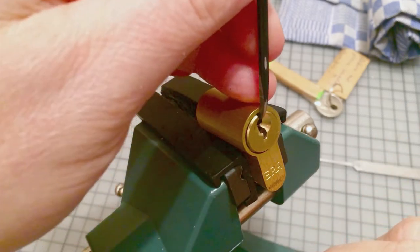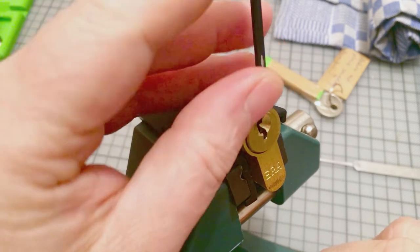I use tension from bottom of the keyway and this standard hook here. The key is mummified and sealed, so I don't know how the bitting is. And I will try to get it open.